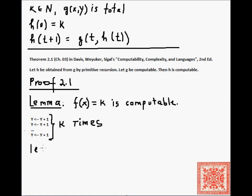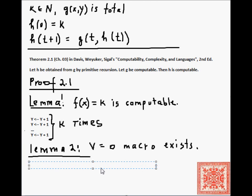The second lemma that we need to show that h is computable to write the program. Obviously h is total because g is total, so we don't need to show that it is total. We just have to exhibit the program. So the second lemma in that program that we will write shortly is that this macro that checks whether the value of v for some variable v equals 0 exists. In other words, we can write a macro for this predicate that checks whether the particular value of a variable is equal to 0.